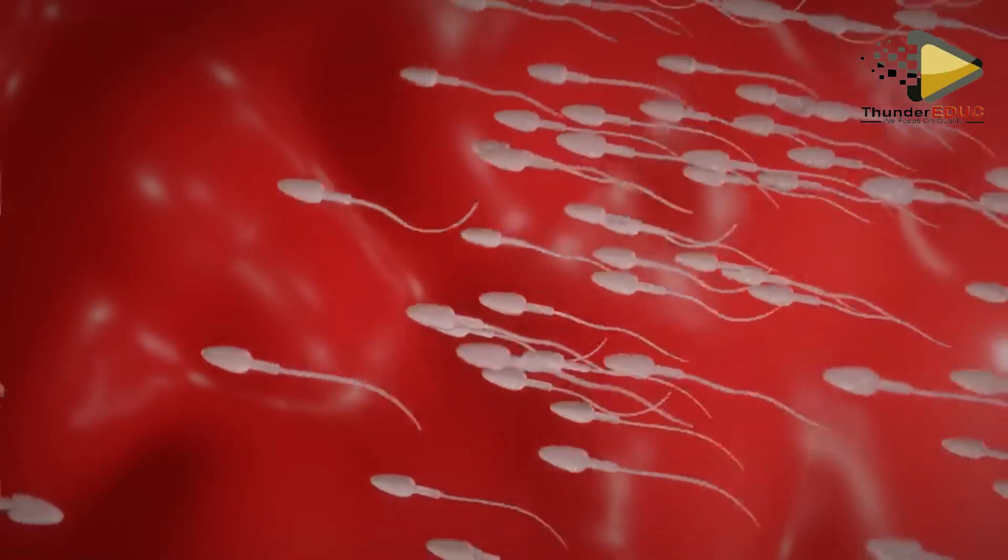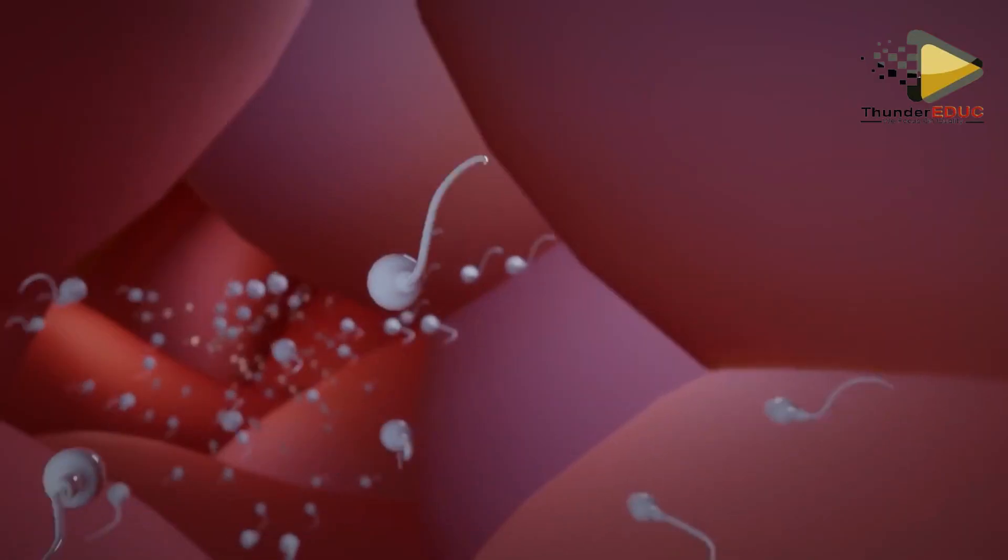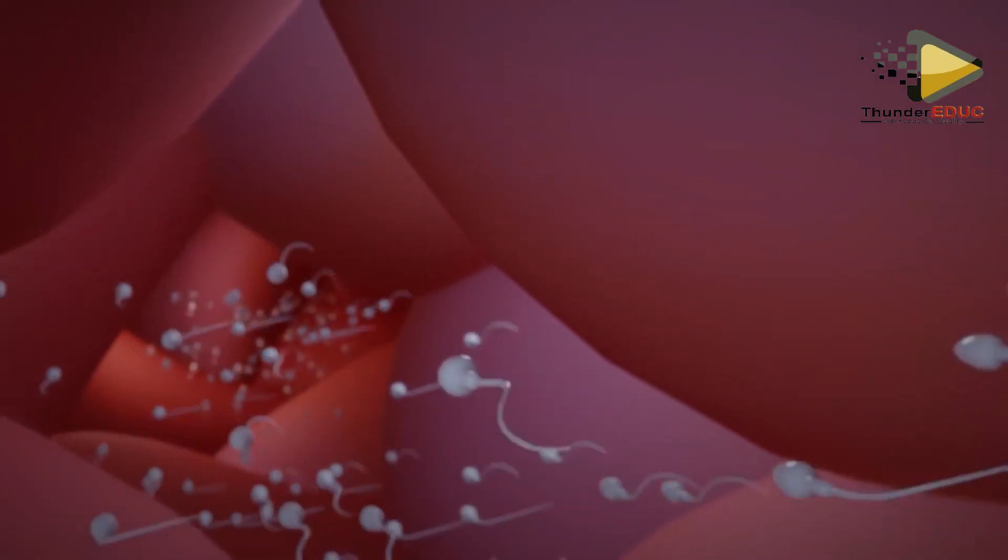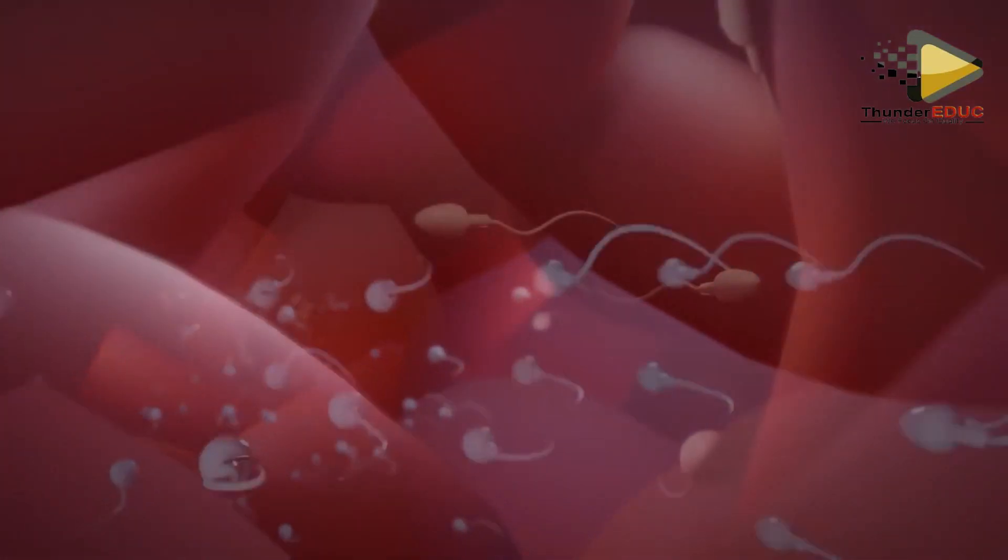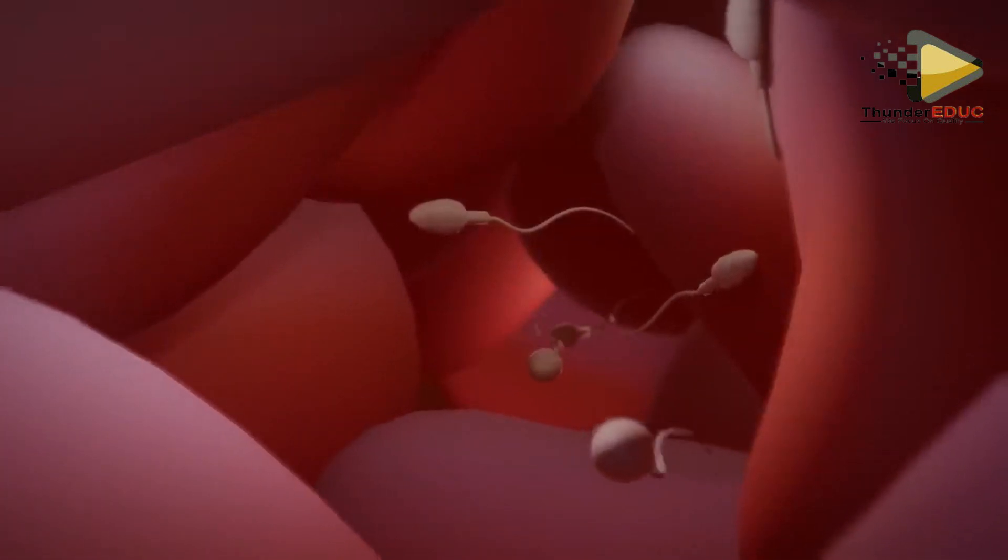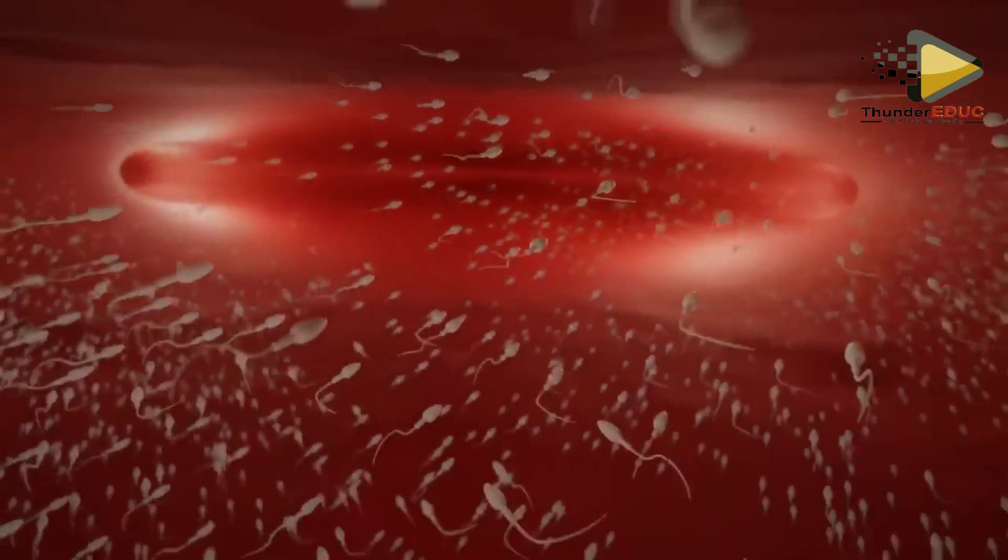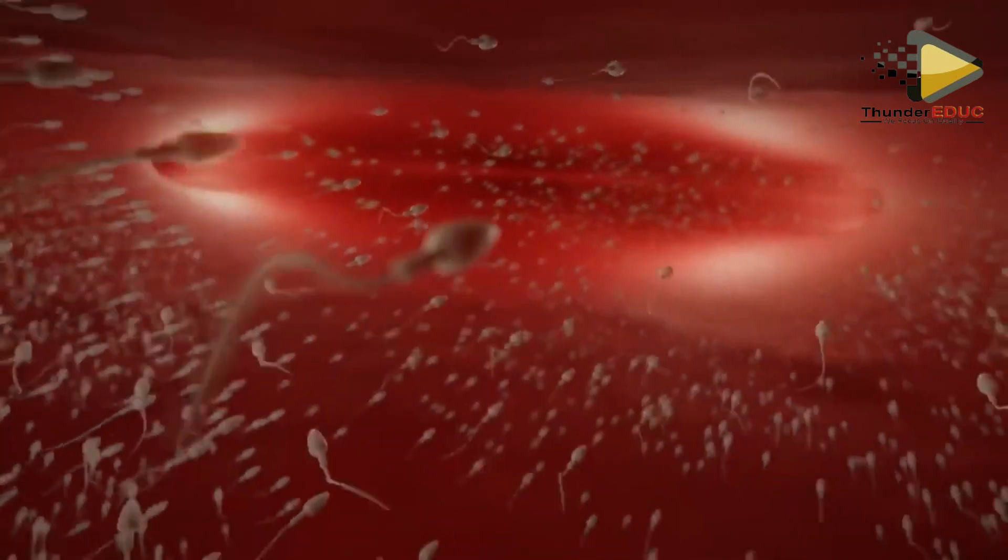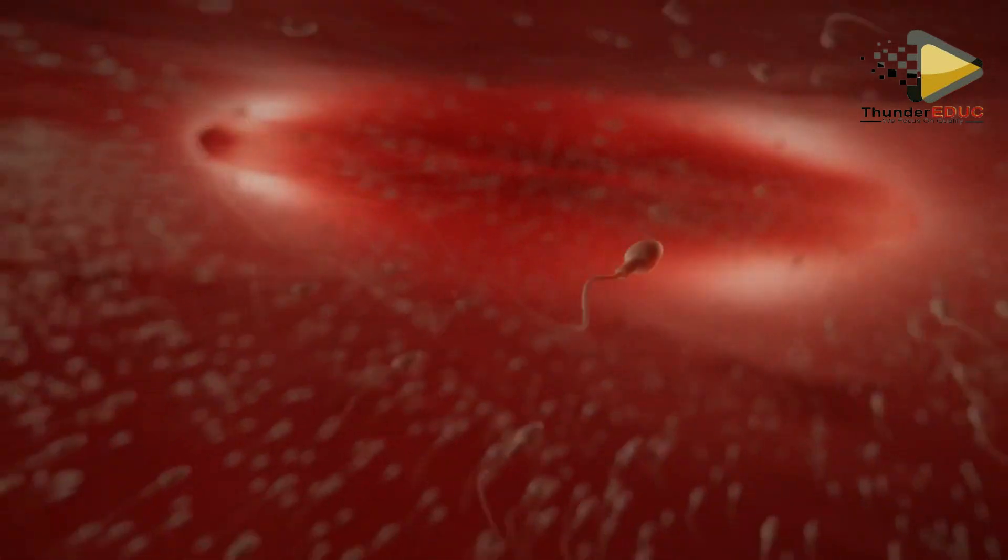That's why over 300 million sperms are produced in a single ejaculation, so that a few million can survive to the fallopian tube.